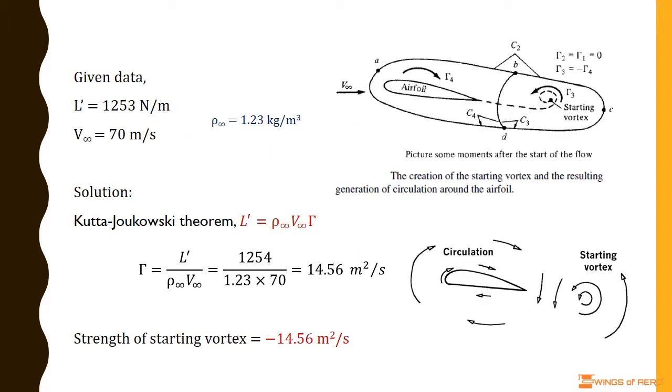Given data: Here, the freestream velocity V∞ is 70 meters per second, and the lift per unit span L' is 1254 newtons per meter.